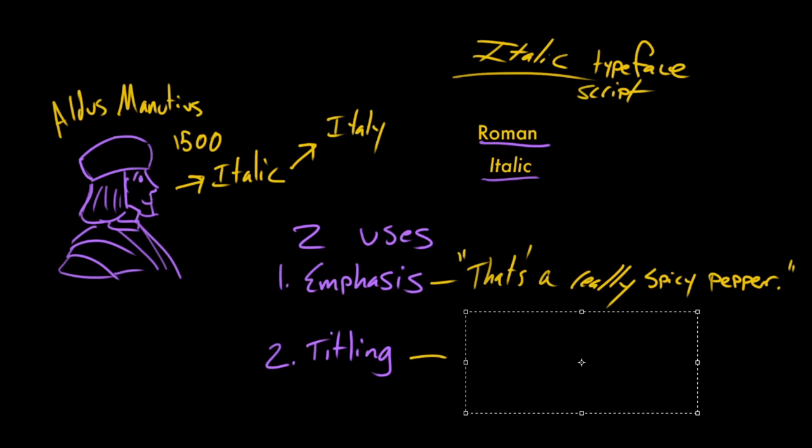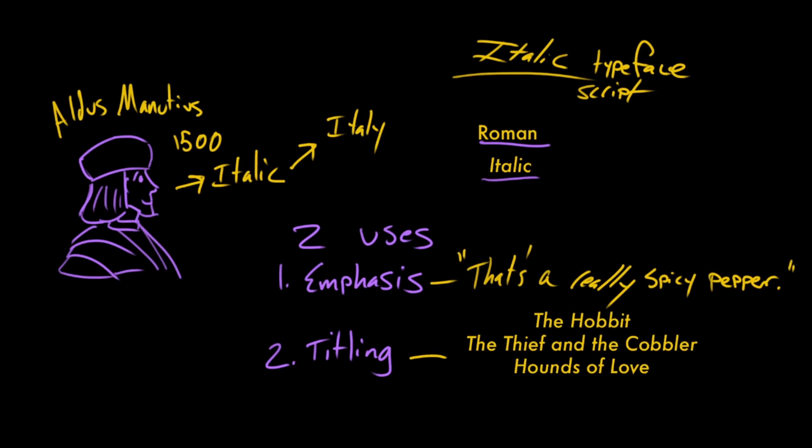So how do titles work? So if you have a title of something like book or a movie. Okay, so we've got our book, The Hobbit, we've got our movie, The Thief and the Cobbler. And we have a full-length musical work or like a symphony or an album, like Kate Bush's Hounds of Love. All of those things can be rendered in italic type.